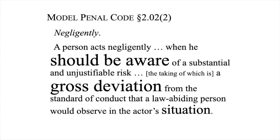Under the Model Penal Code, a person acts negligently when he should be aware of a substantial and unjustifiable risk, the taking of which is a gross deviation from the standard of conduct that a law-abiding person would observe in the actor's situation. The Williams court does not require the prosecution to prove gross negligence — ordinary tort-level negligence can suffice.